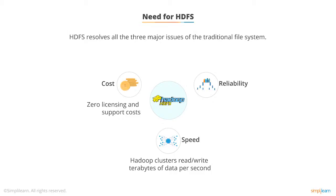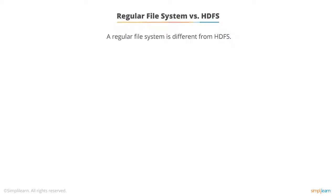Regarding Reliability: HDFS copies the data multiple times and distributes the copies to individual nodes. A node is a commodity server interconnected through a network device. HDFS then places at least one copy of data on a different server. In case any of the data is deleted from the nodes, it can be found within the cluster.